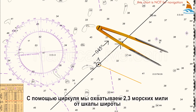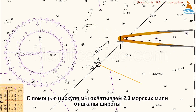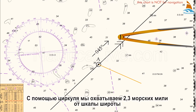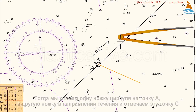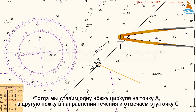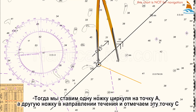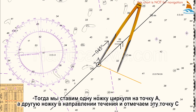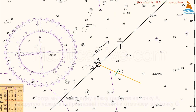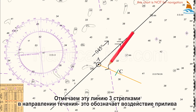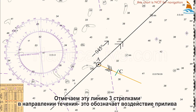Using the dividers, we span 2.3 nautical miles on the latitude scale. Then we place one leg of the dividers on point A and the other leg in the direction of the tidal set, and we mark this point with C. Mark this line with three arrowheads in the direction of the set and drift. This marks the tidal effect.